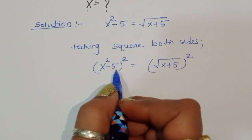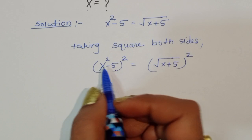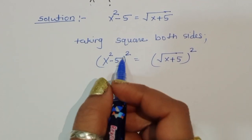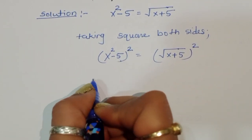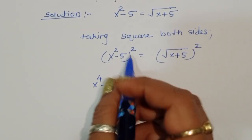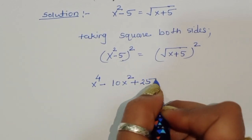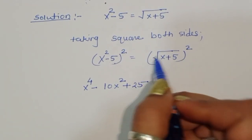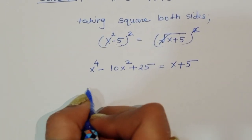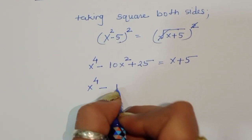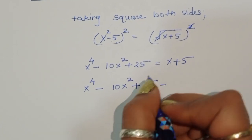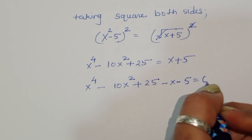Now (x² - 5)² — we use the (a - b)² formula: a² - 2ab + b². Using that formula we get x⁴ - 10x² + 25. And on the right side, the square cancels the square root, giving x + 5. So: x⁴ - 10x² + 25 - x - 5 = 0.